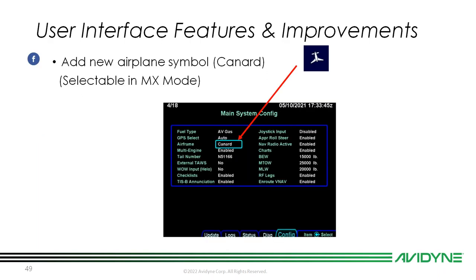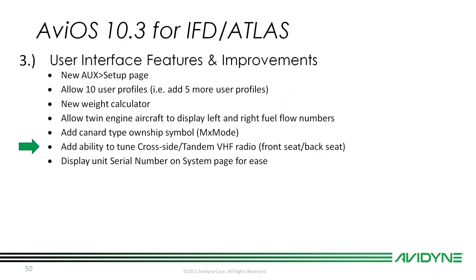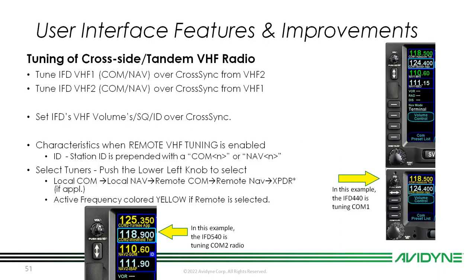We've added a canard-type own-ship model in maintenance mode — someone on Facebook asked about it and it was easy to implement. Another feature is the ability to cross-side tune VHF radios for front seat/back seat tandem aircraft — even with a stack. This allows you to tune your number one IFD's radios from your second IFD and vice versa, and set volume and squelch for the other IFD — a really neat feature for aircraft with tandem configurations and an IFD in each cockpit.